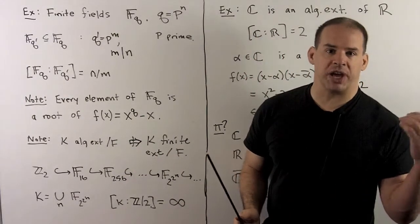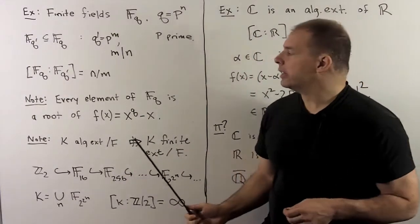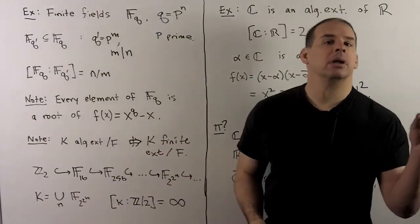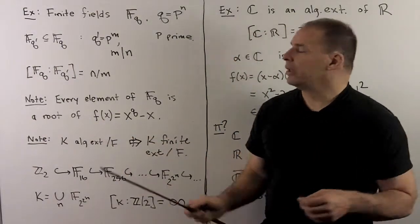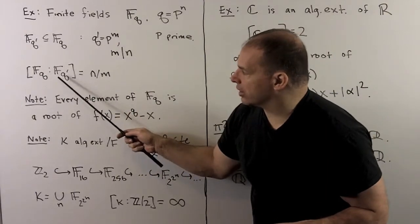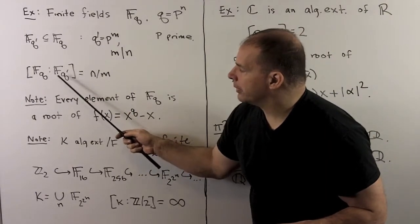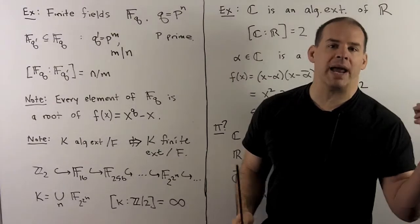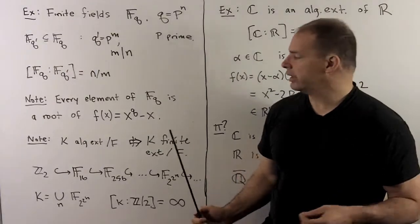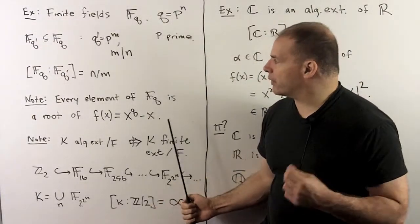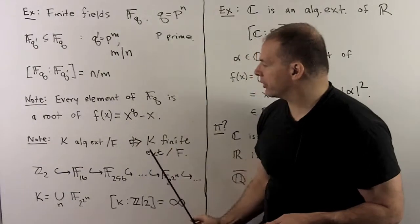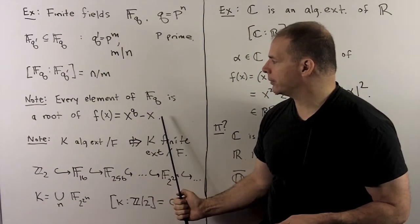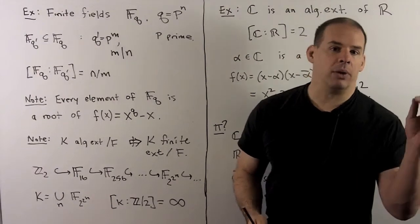Note, we could show this directly for each element. If I take any element in F_q, we know the group of units forms a cyclic group, so every element in F_q is a root of x to the q minus x. This polynomial has its coefficients in F_{q'}, and the coefficients are 1 and minus 1.